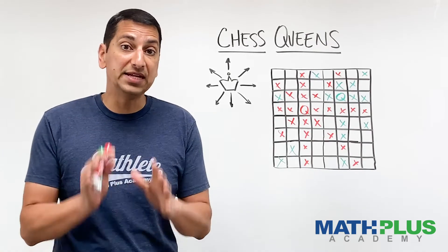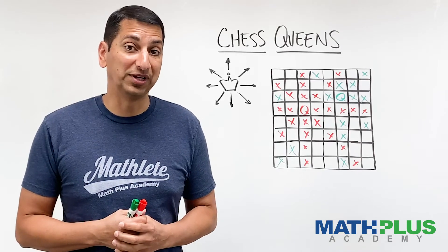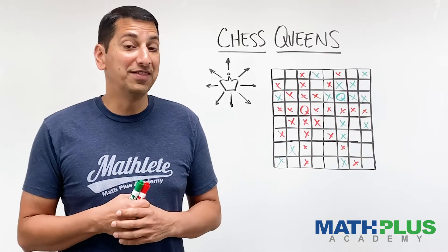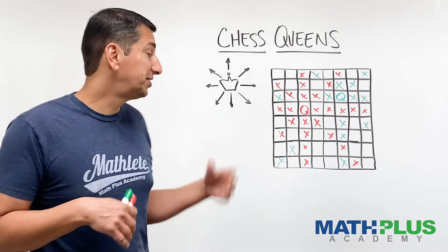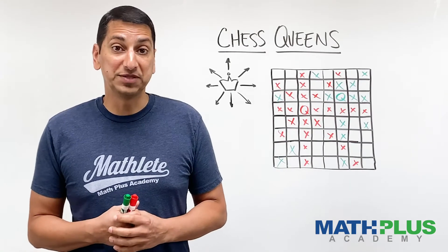But see if you can get eight queens onto this chessboard. If you find one way, then try and find other ways, other solutions to this problem. So this is a fun little challenge with the chessboard.